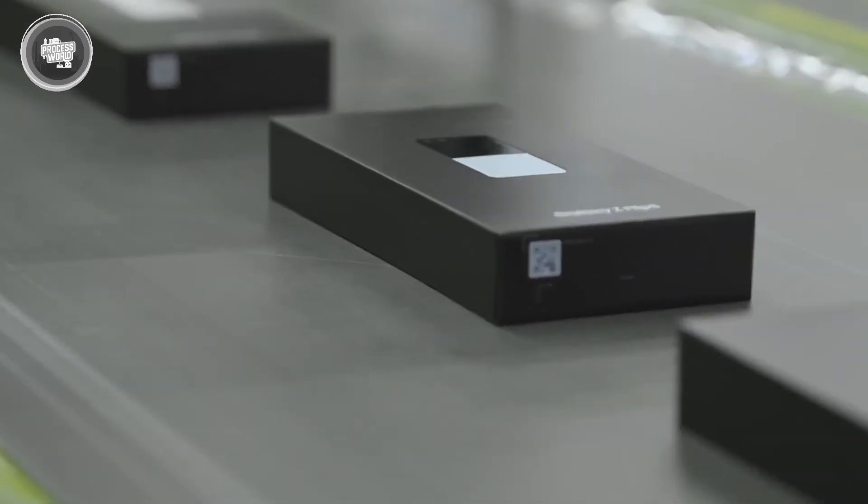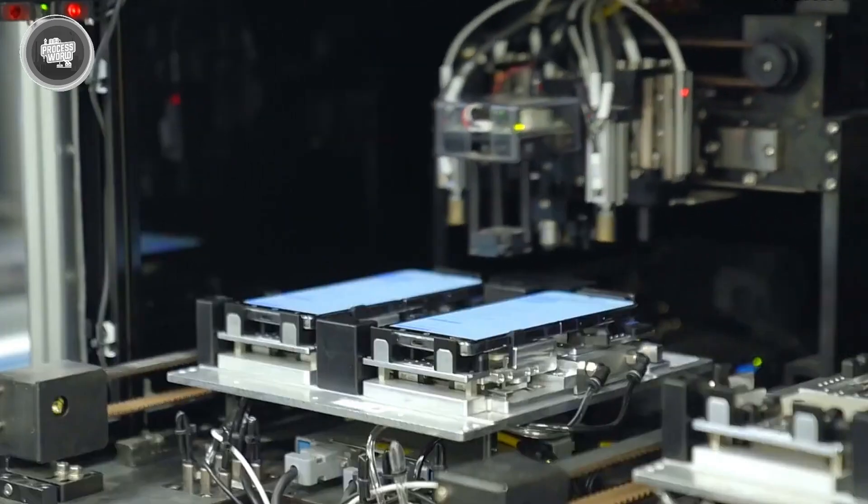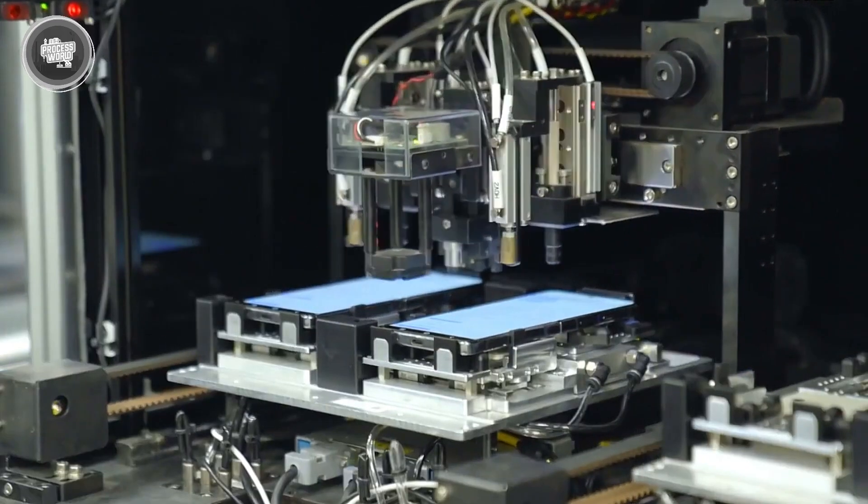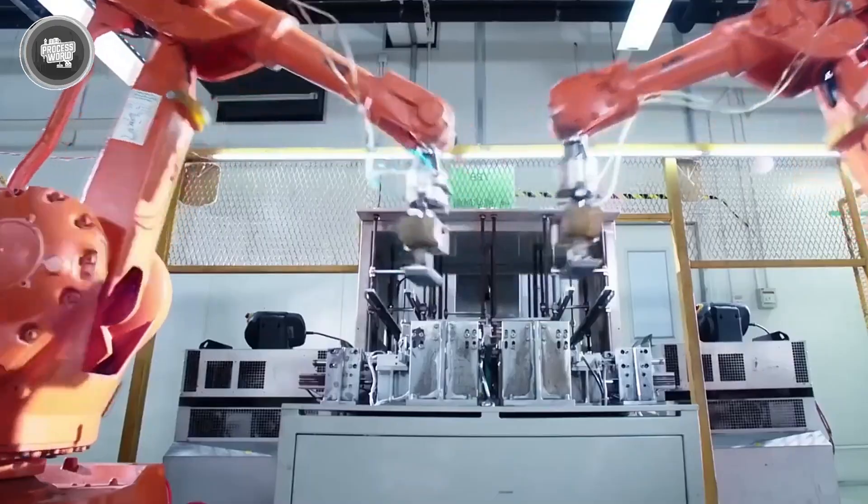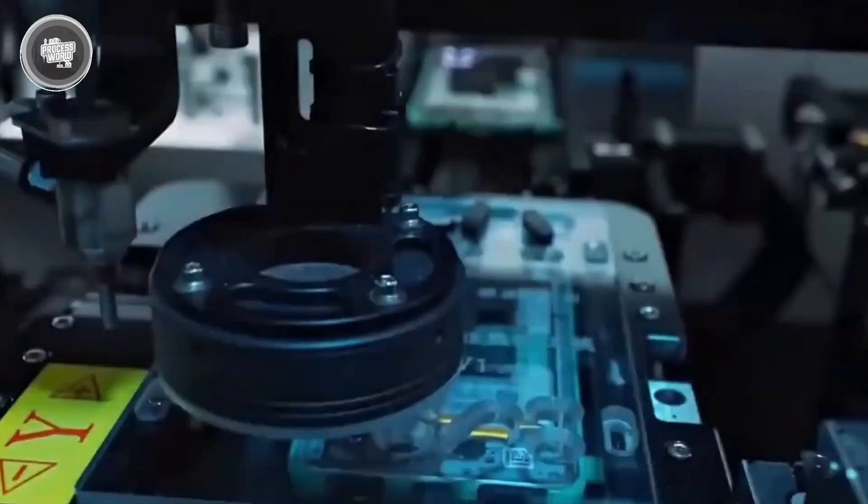So now that you know how every Samsung phone is built from scratch, right down to the screws, chips, and recycled packaging, would you ever want to visit one of these factories and see the process up close? Or even better, what part of the phone would you love to redesign yourself if you had the chance? Let us know in the comments as you like the video and subscribe for more like this!